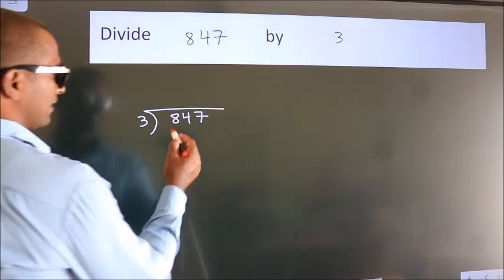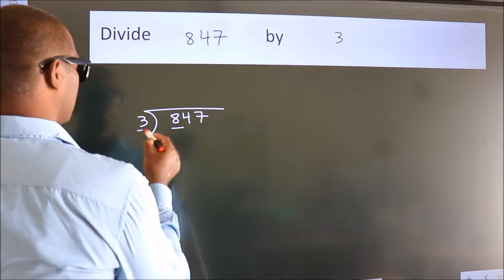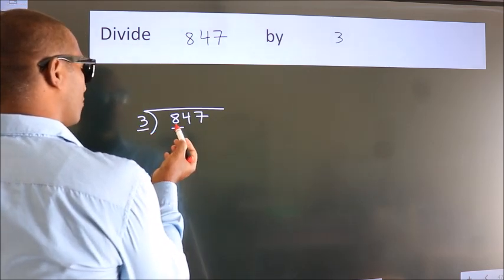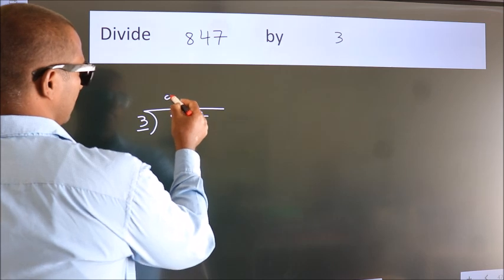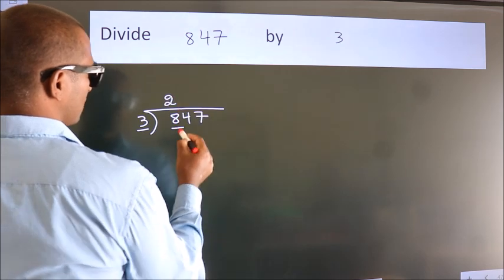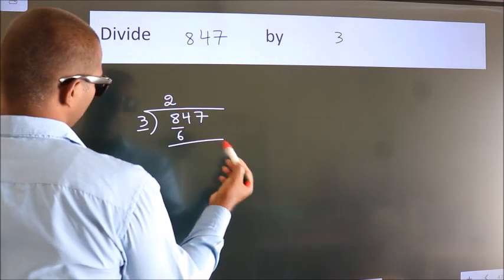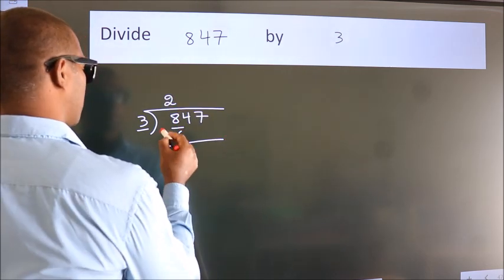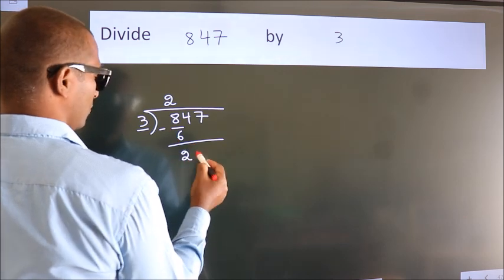Here we have 8, here 3. A number close to 8 in the 3 times table is 3 twos, which is 6. Now we should subtract. We get 2.